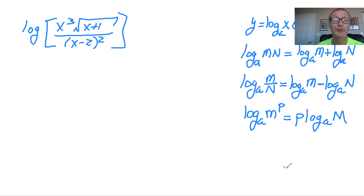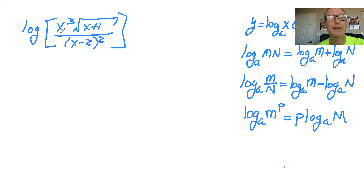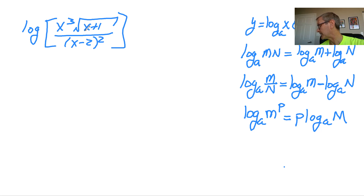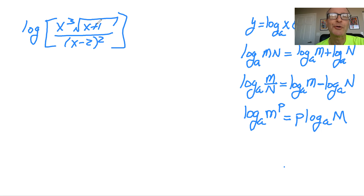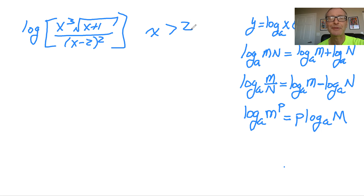We have a numerator and denominator, so we have to think about the constraints. X cannot be zero, because we can't have a zero inside our log, and we can't divide by zero, so x can't be 2 either. You'd also think about the square root — we can't have a negative inside it. This is problem 52 in the book, and it indicates that x must be greater than 2, which handles any domain issues.